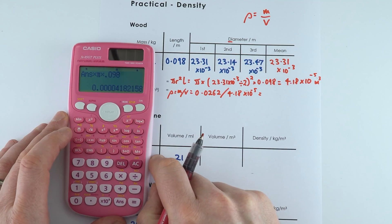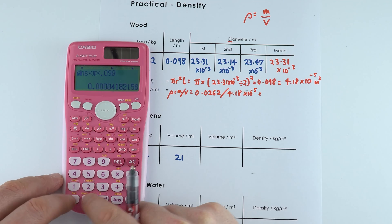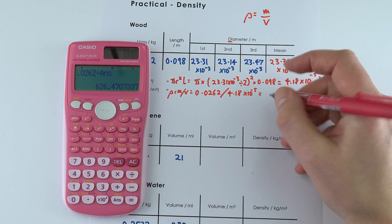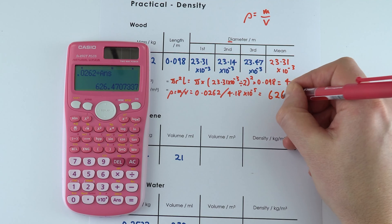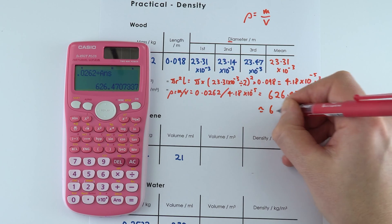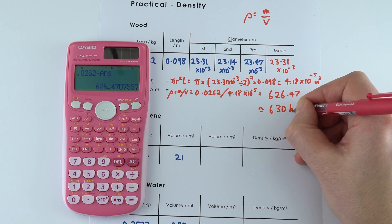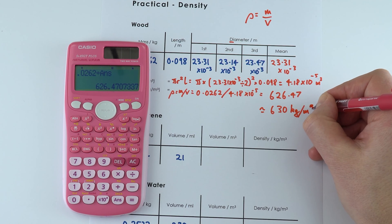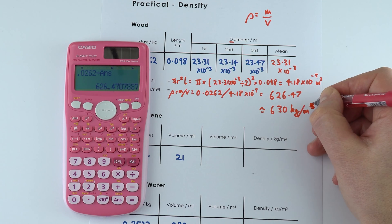So I'm going to leave this value in my calculator and I'm going to do 0.0262 divided by this answer which equals 626.47, which is 630 kilograms per cubic meter. So kg/m³.